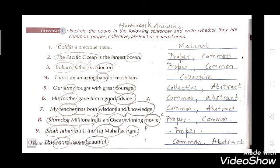See the second one: 'The Pacific Ocean is the largest ocean.' The Pacific Ocean is a proper noun because it is the name of a particular ocean. Ocean is a common noun because when you hear ocean, many oceans come to mind — Pacific Ocean, Atlantic Ocean, Indian Ocean — so it is a common name.